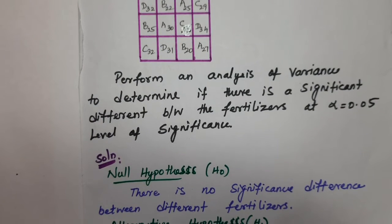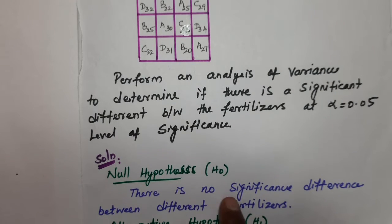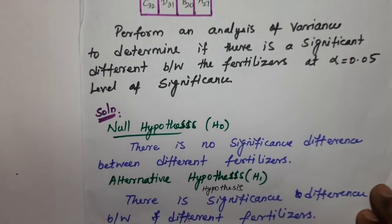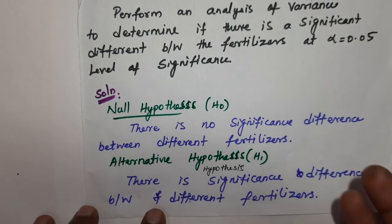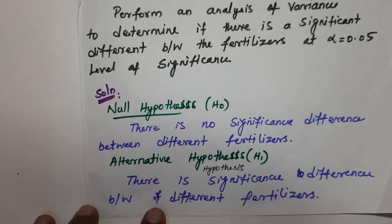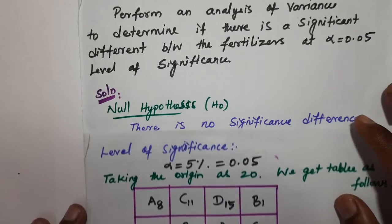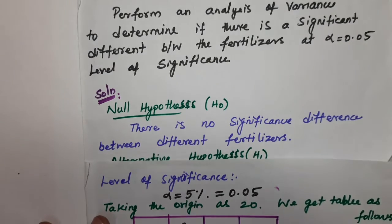The null hypothesis states there is no significant difference between the different fertilizers. The alternative hypothesis states there is a significant difference between the different fertilizers. The level of significance is five percent, i.e., alpha equals 0.05.